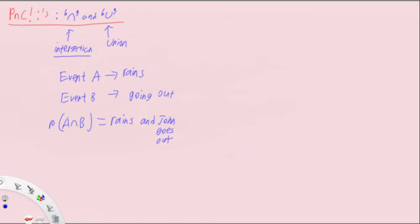On the other hand, when we talk about union, the idea of collaboration might come to mind. But in probability, A union B essentially means A or B happening. So together we have the probability of A happening or the probability of B happening — P(A or B).